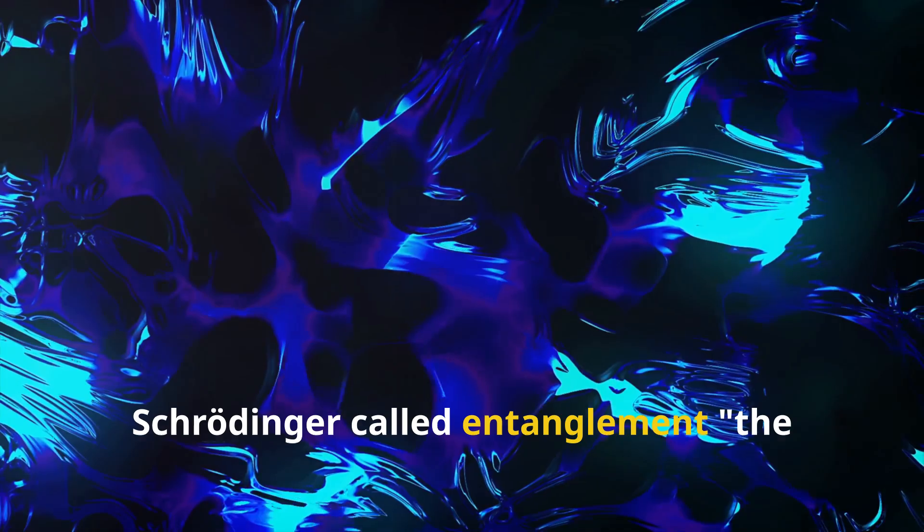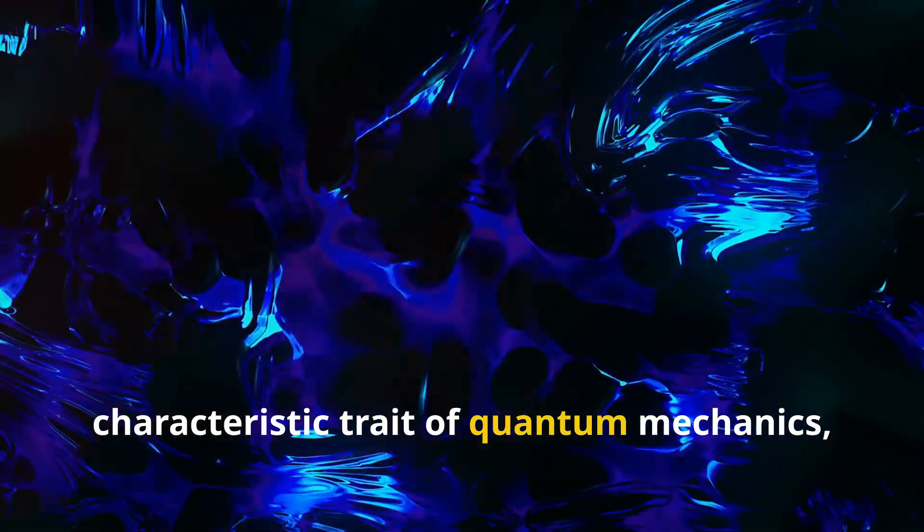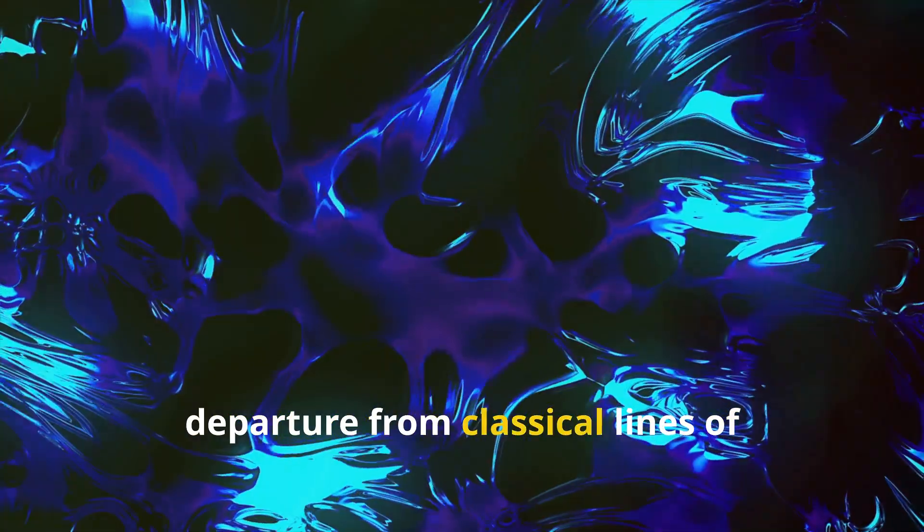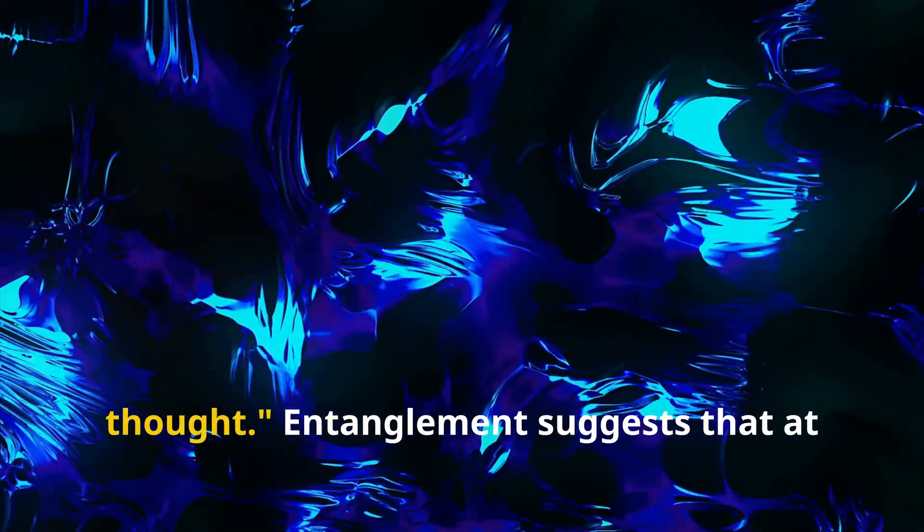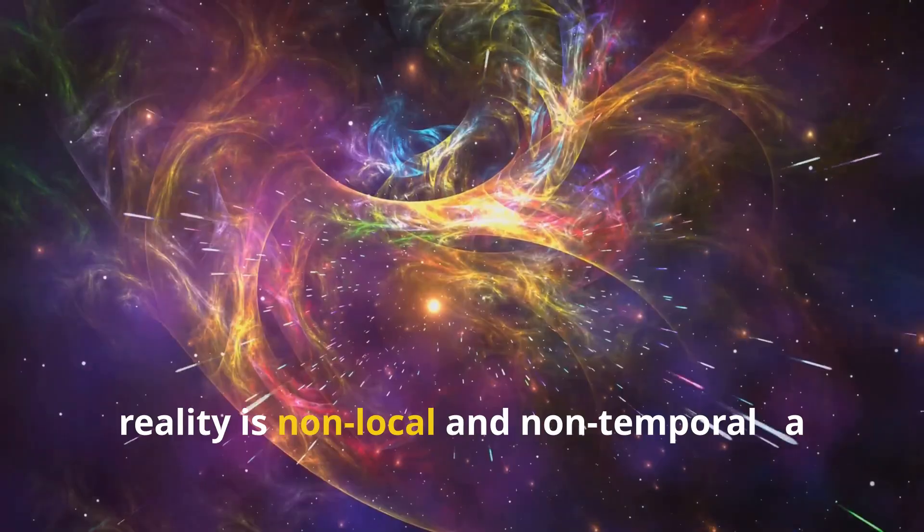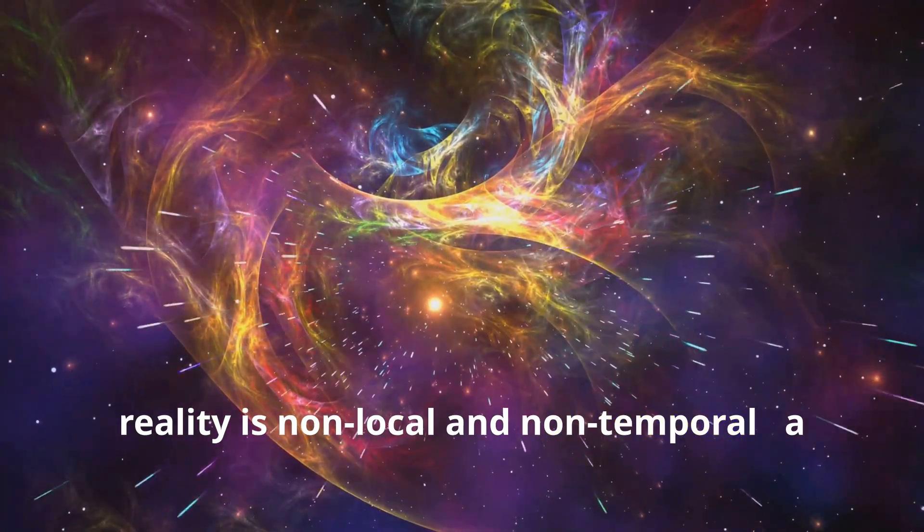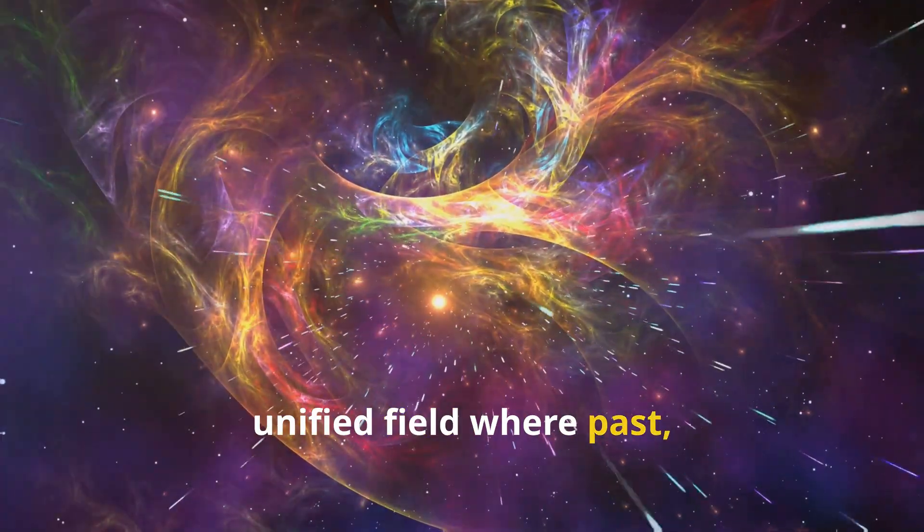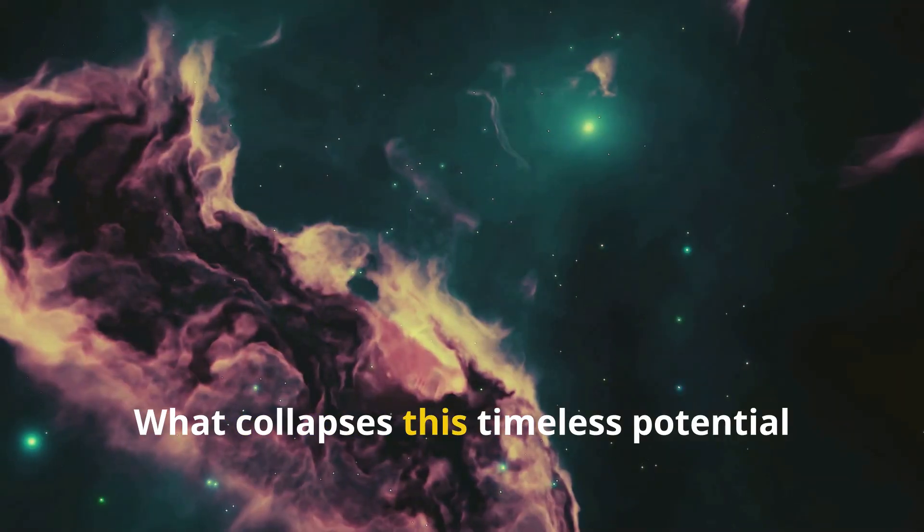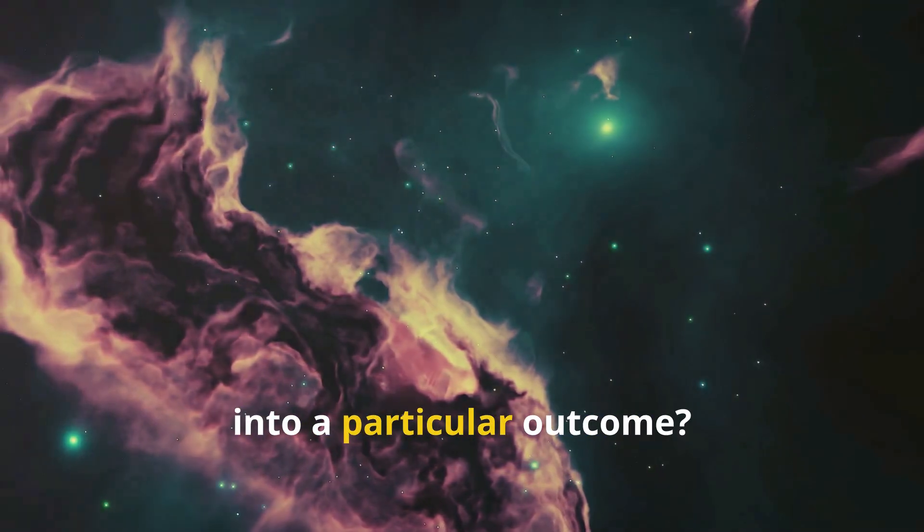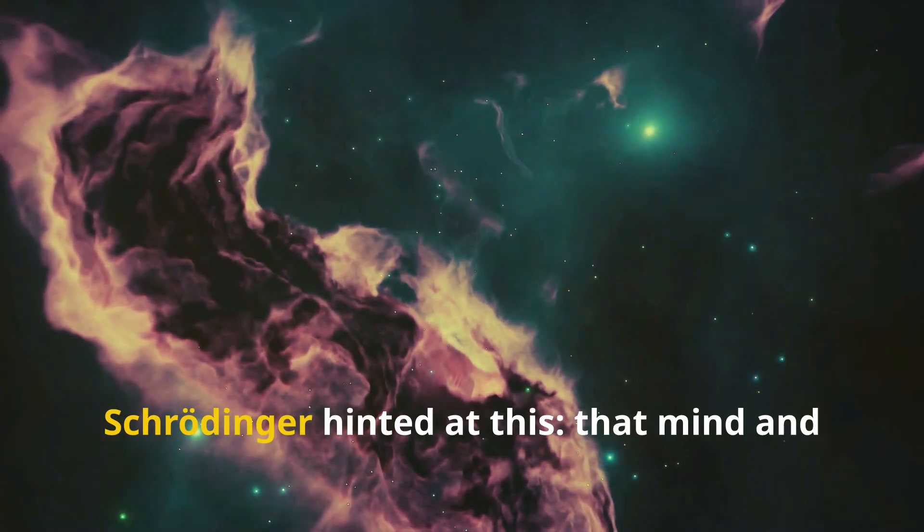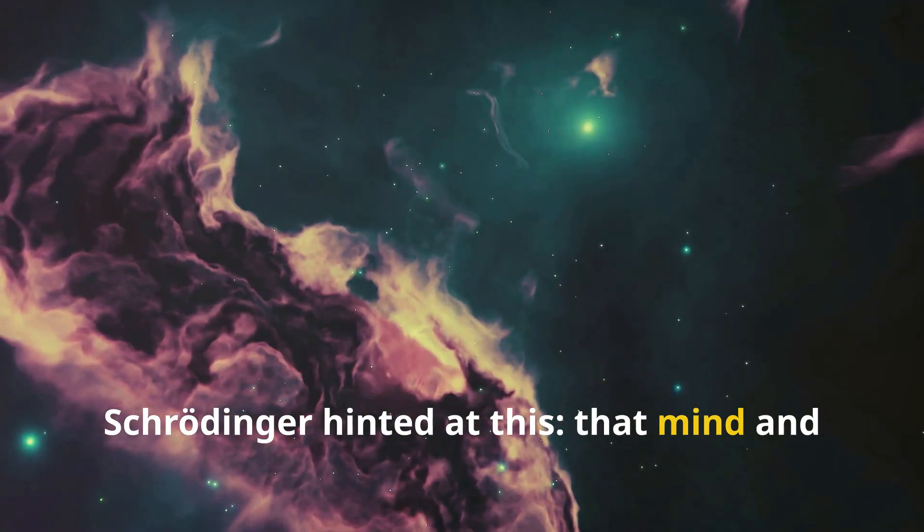Schrödinger called entanglement the characteristic trait of quantum mechanics, the one that enforces its entire departure from classical lines of thought. Entanglement suggests that at the deepest level, reality is non-local and non-temporal—a unified field where past, present, and future are interwoven. What collapses this timeless potential into a particular outcome? Observation, or more deeply, consciousness.